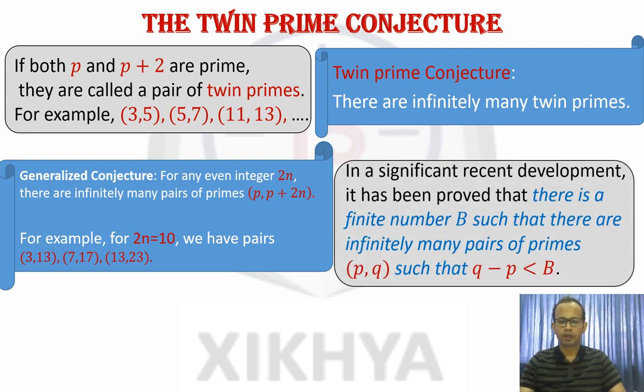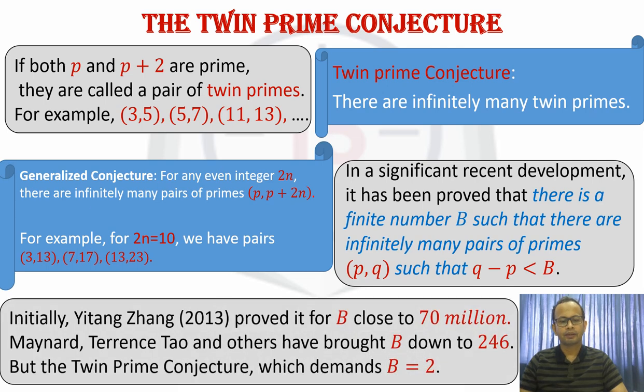So these conjectures have not been proved as they have been stated, but there has been a lot of progress. What is that progress? That it has been shown that at least there is some finite number b, such that there will be infinitely many pairs of primes p and q, which differ by less than or equal to b. And Zhang was the first mathematician who showed it for b close to 70 million, which is a very big number. Later on, this b was shown to be 246. But of course, the twin prime conjecture demands that b should be 2.